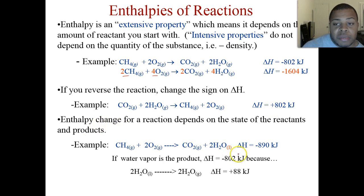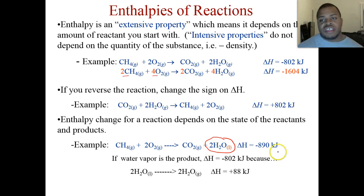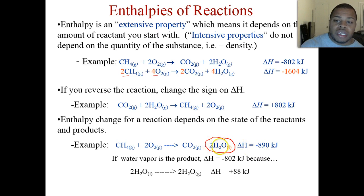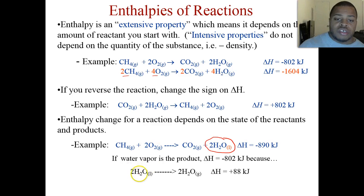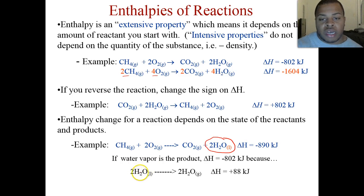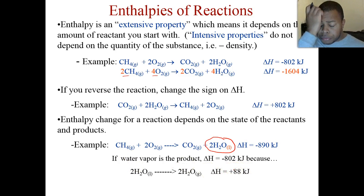This is where the state of the substance matters. The same reaction, but now instead of gaseous water we have liquid water. This changes how much energy is actually lost in the combustion — it loses more energy because some has to go off those molecules that were moving about. For two moles of liquid water to turn into a gas, we need positive 88 kilojoules. So going from gas to liquid, we lose that 88 kilojoules of energy.